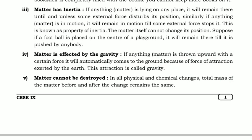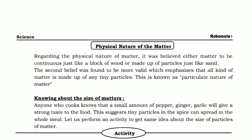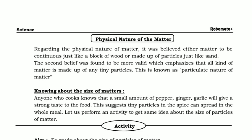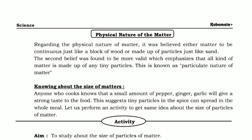Another point: matter cannot be destroyed. By physical or chemical means, the total mass of matter before and after any change will remain the same. Now, regarding the physical nature of matter, it was believed that matter is either continuous — like a block of wood — or made up of particles, like sand. The second belief was confirmed: matter is made up of very tiny particles, which is known as the particulate nature of matter. To understand the size of these particles, we will do an experiment.